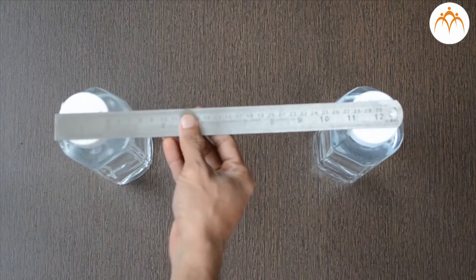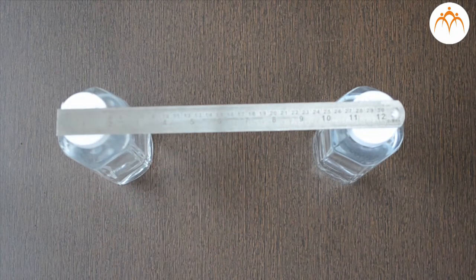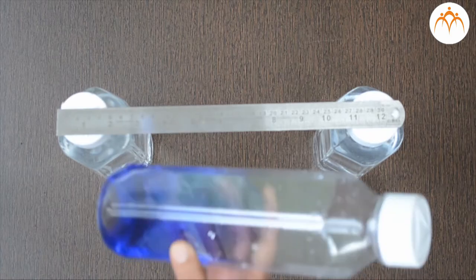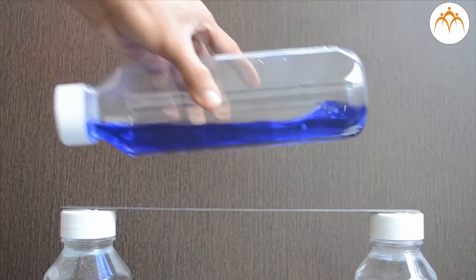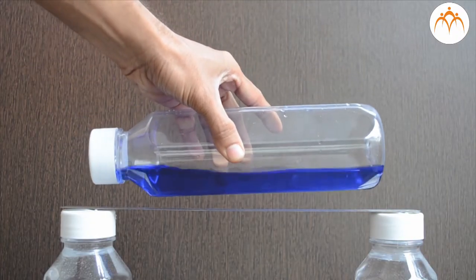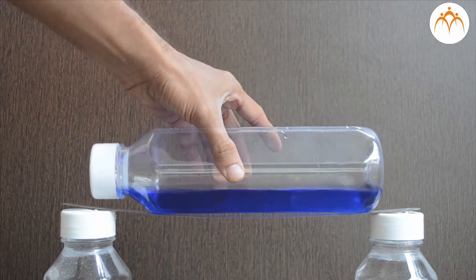We will take this ruler and place it between these books. If I take this metal block which is very heavy and place it on the ruler, what will happen? The ruler will bend slightly.